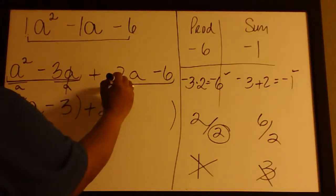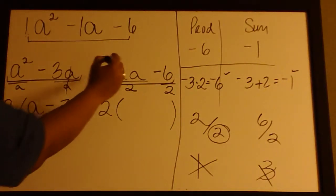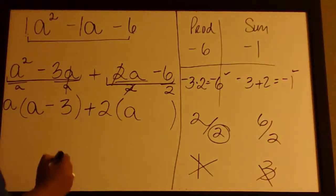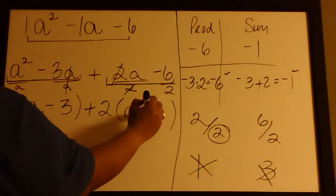Dividing each of these terms by 2, these 2's cancel and I'm left with a, and -6 divided by +2 is -3.